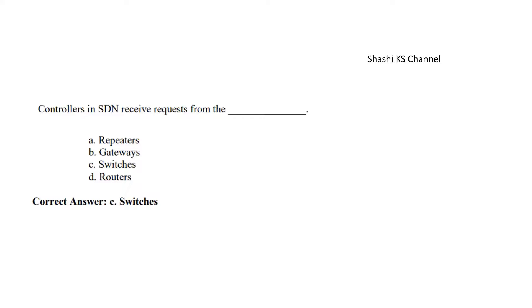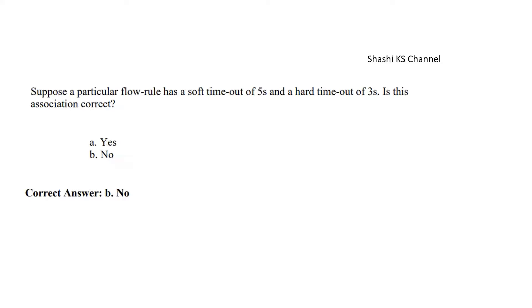Next question, controllers in SDN receive requests from the dash, repeaters, gateway, switches and routers. The right answer to this is switches. Next question, suppose a particular flow rule has a soft timeout of five seconds and a hard timeout of three seconds. Is this association correct? Option A is yes and option B is no. The right answer is no because the hard timeout cannot be less than that of soft timeout. So this particular flow rule cannot be valid and this association is not correct.